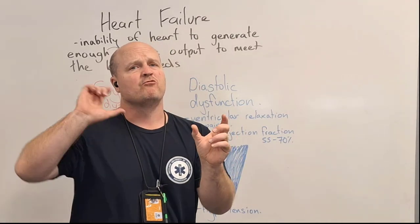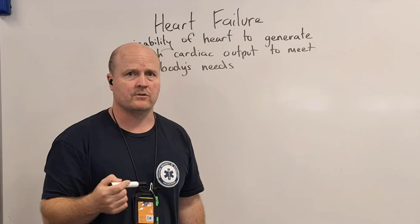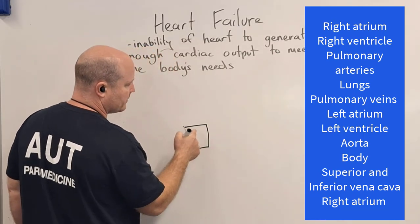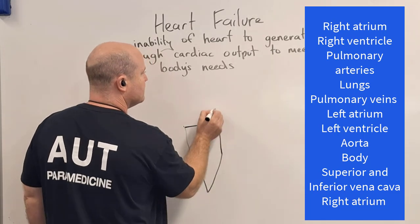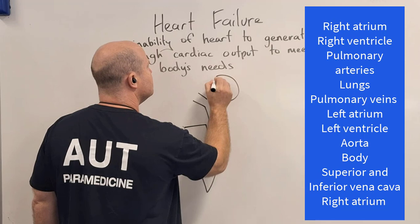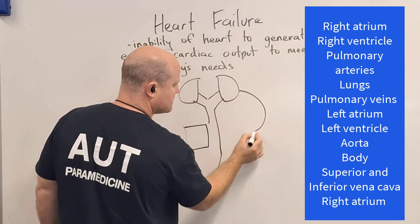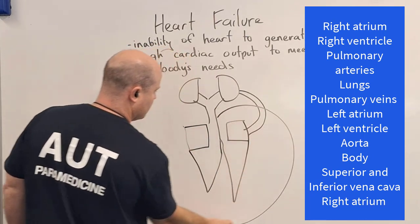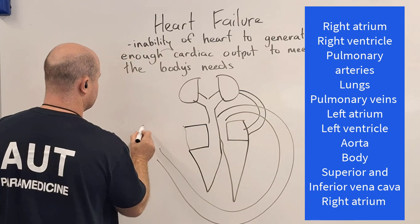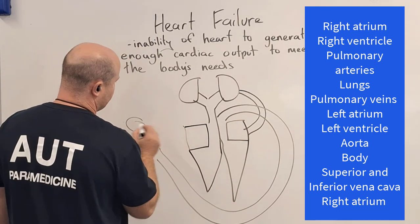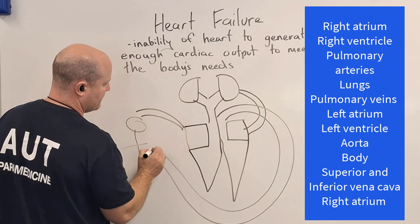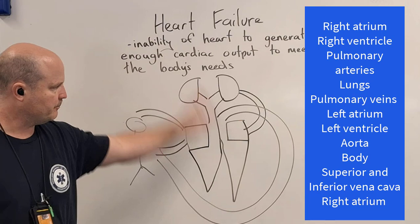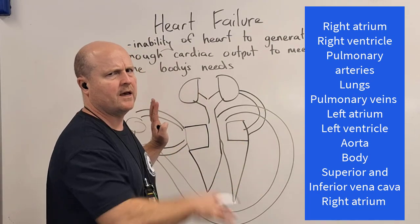Now let's talk about the difference between left and right-sided heart failure. Let's draw the circulation through the heart. Starting at the right atrium, blood goes from the right atrium to the right ventricle, comes out, and goes to the lungs. Then blood comes back from the lungs into the left atrium, left ventricle, and out to the body. From the body, everything above the heart comes back via the superior vena cava and everything below via the inferior vena cava. There's our circulation of the heart.